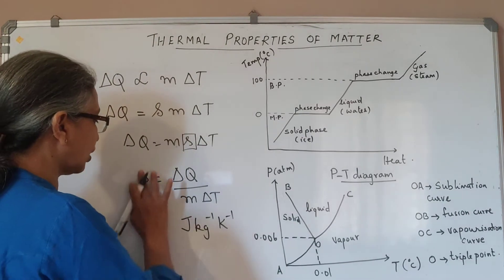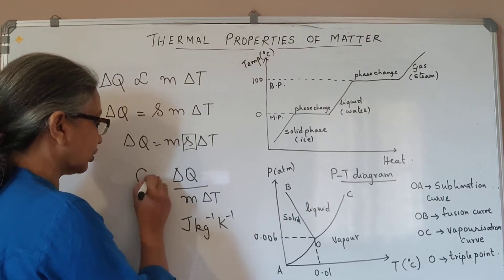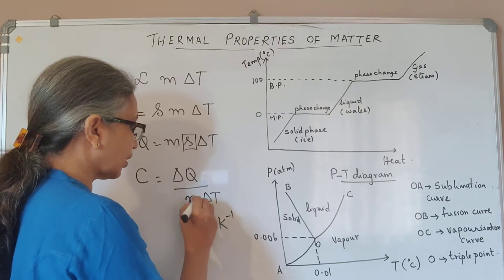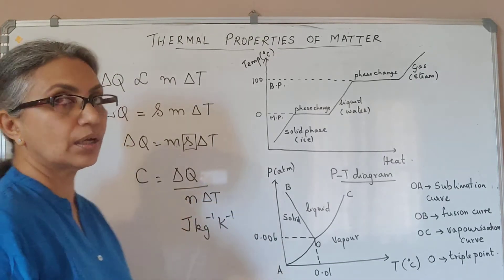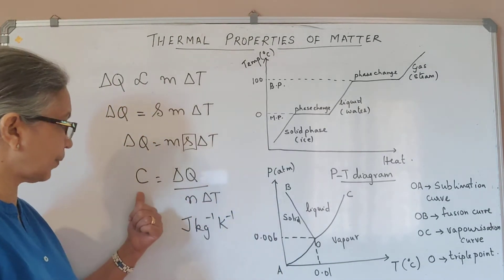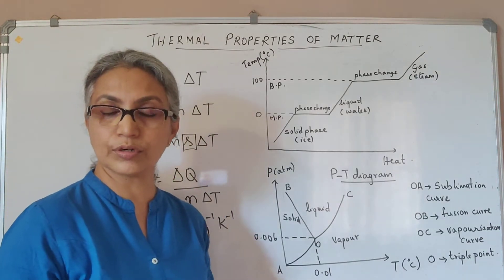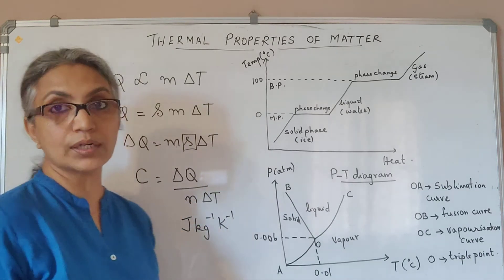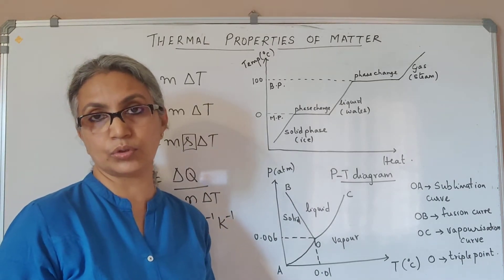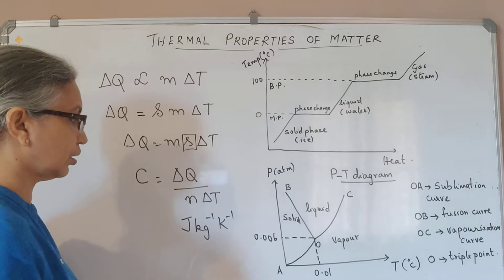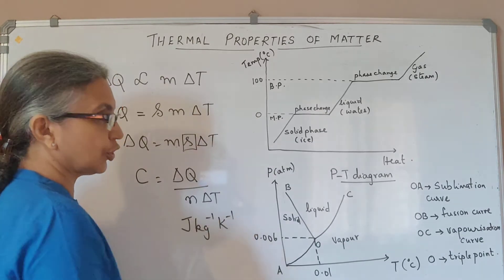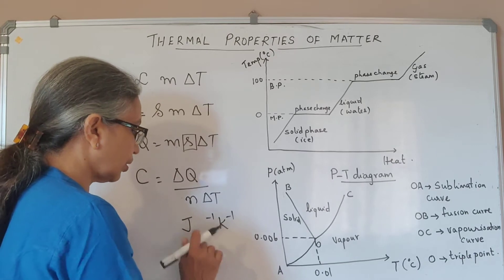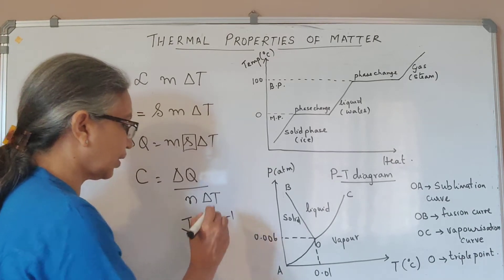We also define another quantity called the molar specific heat capacity, denoted by C, where mass is replaced with the number of moles. Molar specific heat capacity C is defined as the quantity of heat required to change the temperature of one mole of a substance through one unit change in temperature, so its SI unit becomes Joule per mole per Kelvin.